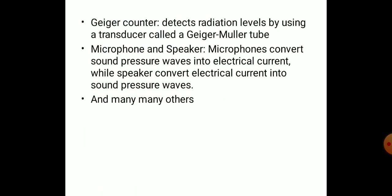Geiger counters are used in the nuclear industry to measure radiation levels using a transducer called a Geiger-Müller tube. Microphones convert sound pressure waves into electric current and speakers convert electric current back into sound pressure waves.